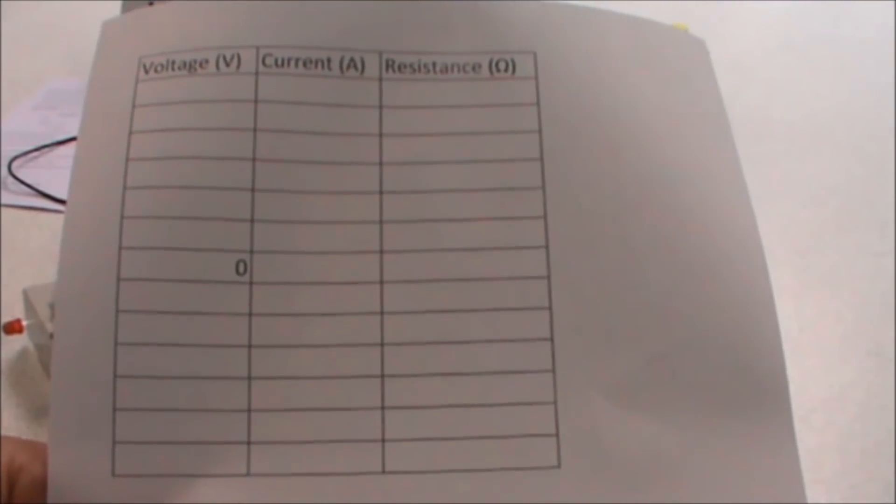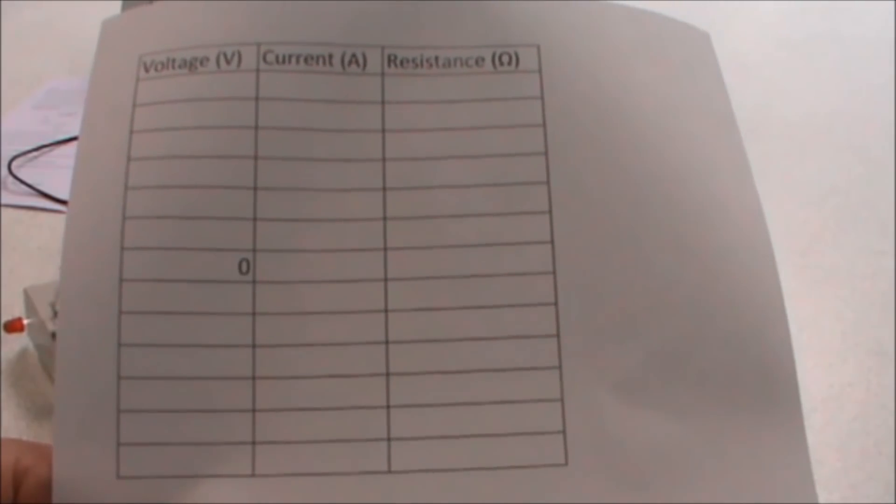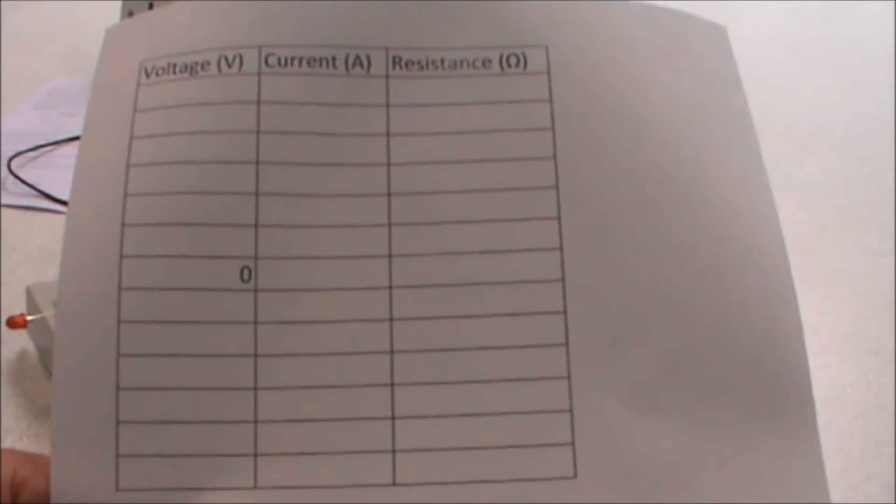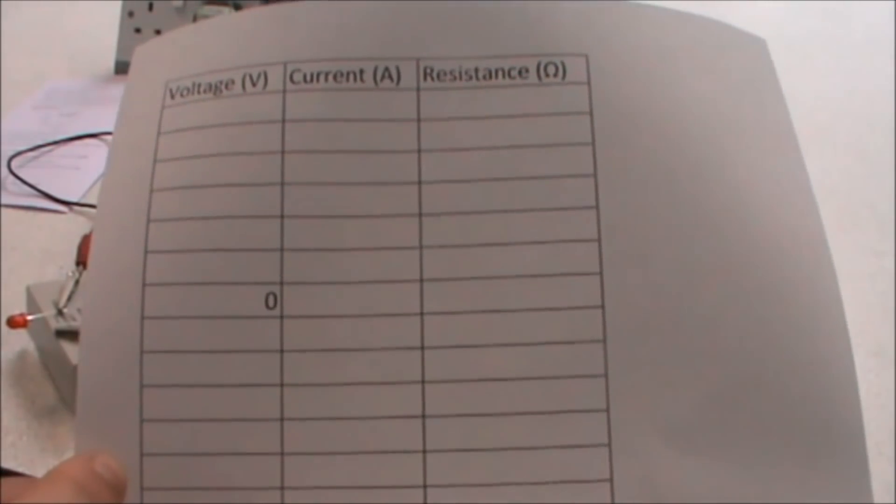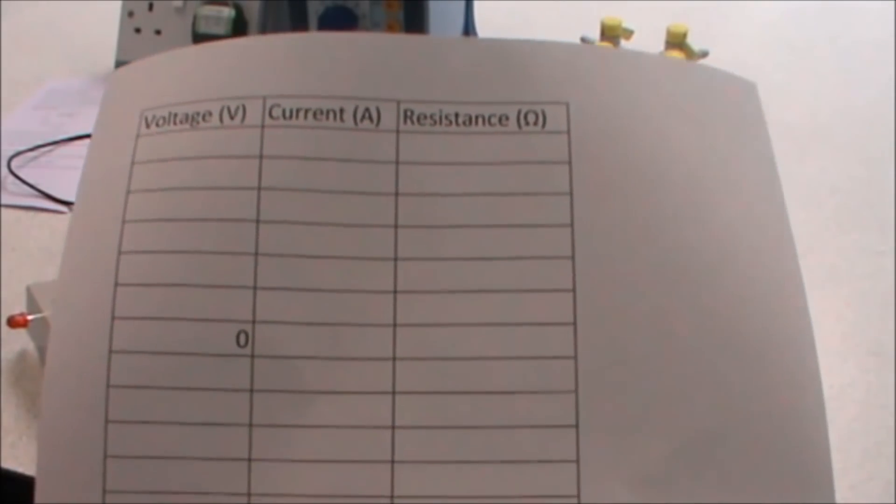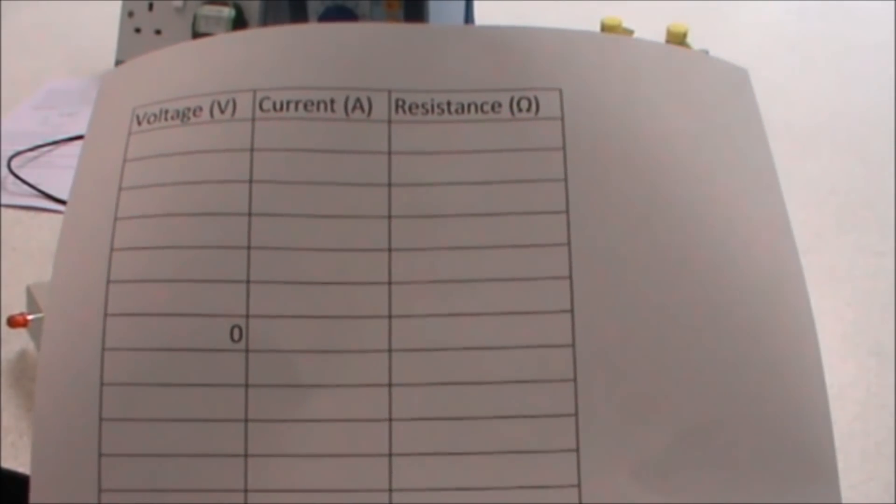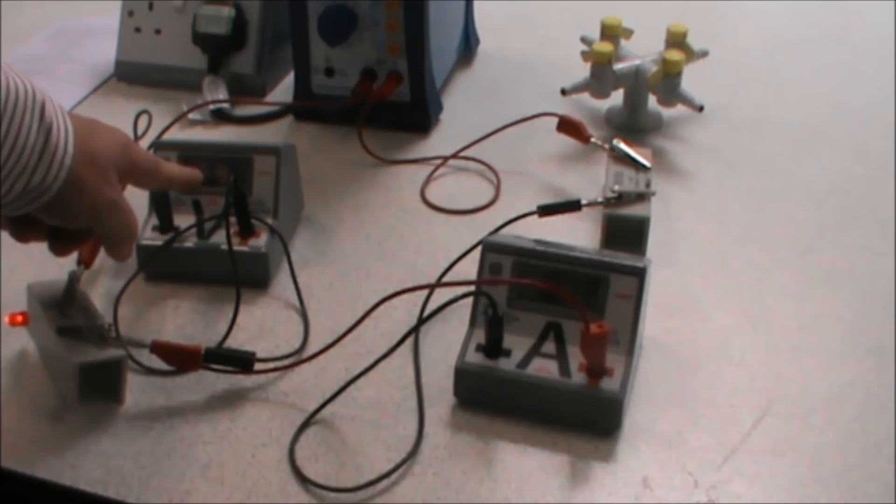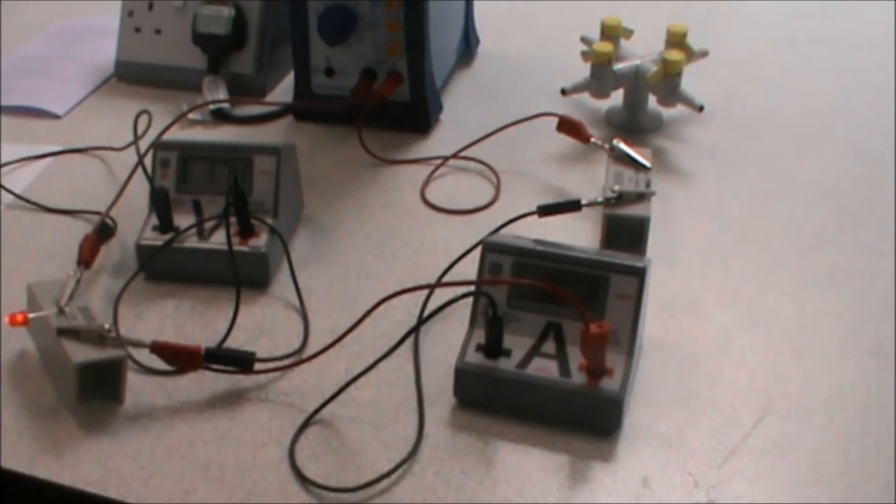As with our ohmic and non-ohmic conductor required practicals, we have a results table here for measuring the voltage, our independent variable, and the current, the dependent variable. We can also calculate the resistance after the experiment. We're going to start recording our results: we've got 3.74 volts on the voltmeter and 0.12 amps on the ammeter.